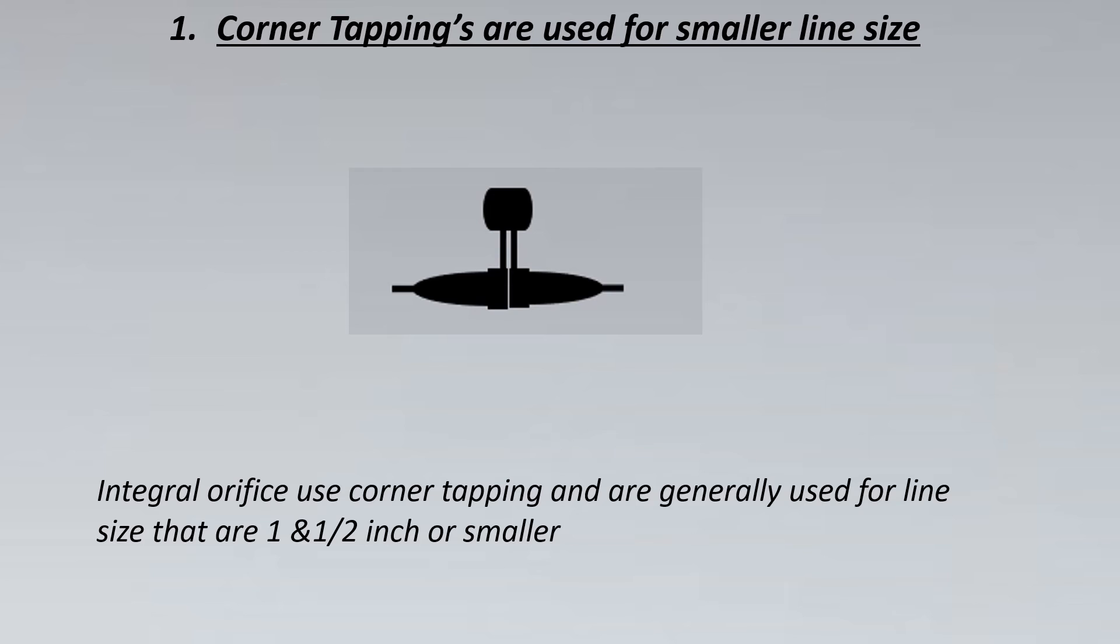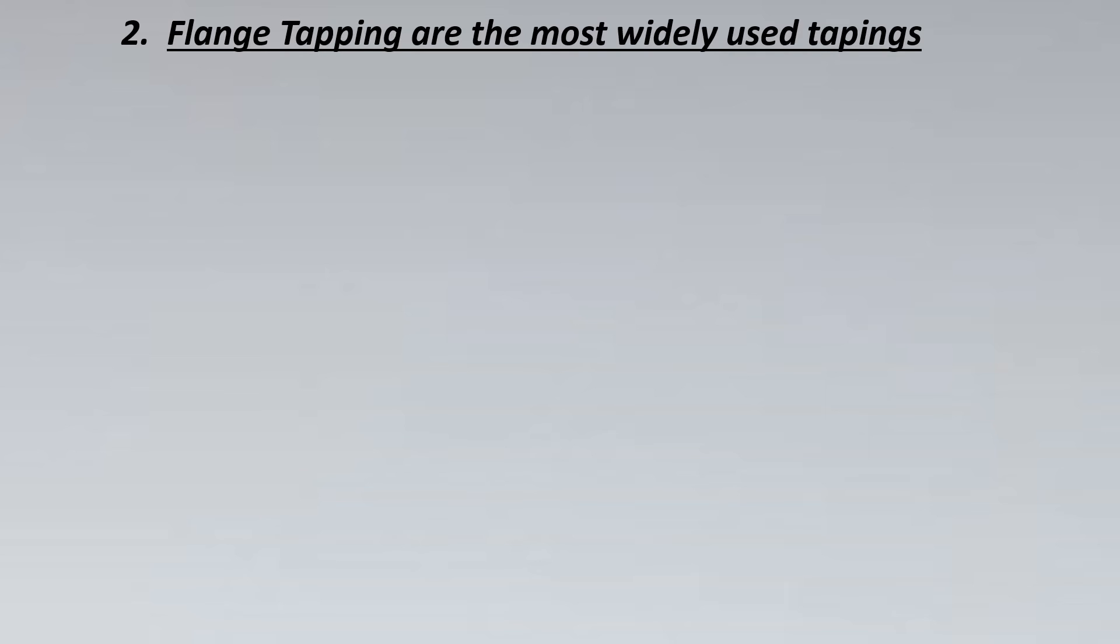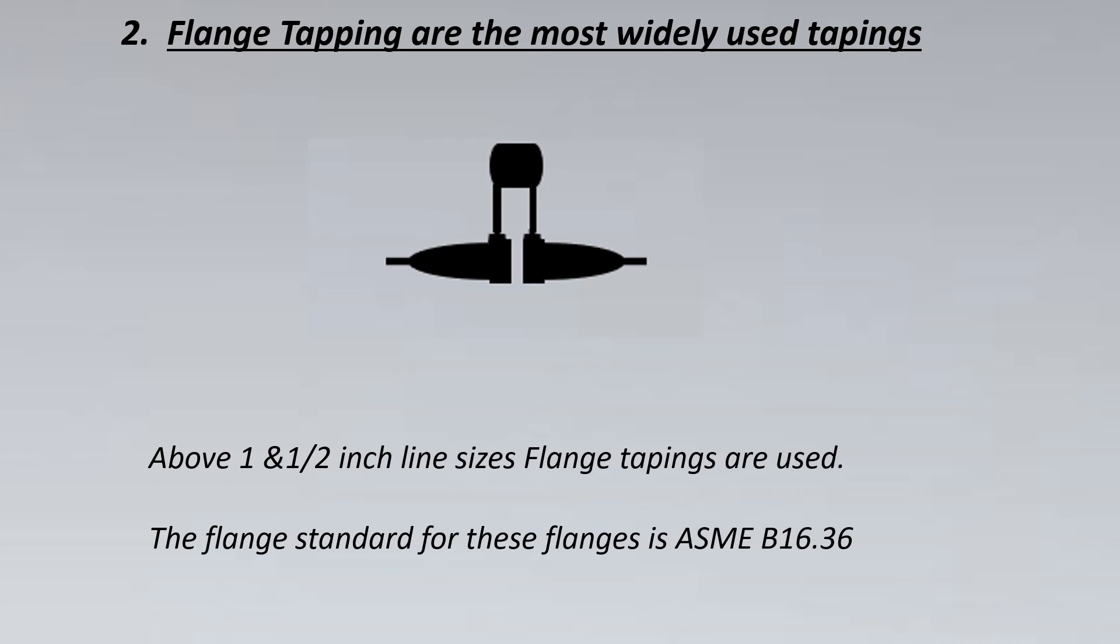Now let's look into the flange tappings. These are one of the most widely used tappings. Sometimes it's the piping department who provides us this kind of flanges having the drills inside them, or we can also take it from the instrument vendor. These are usually used for one and a half inch line sizes and above. And the flange standard, yes that's a good one, it's ASME B16.36.